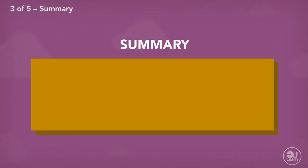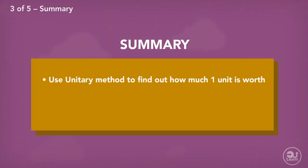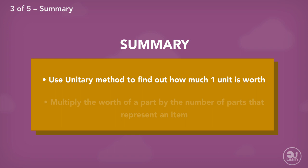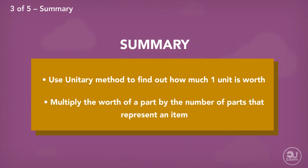To summarise, when sharing an amount using a ratio: calculate how much one part is worth by first finding the sum of the parts — adding the values in the ratio together. Then divide the value given by the total parts to give you the value of one part. Using the values in the ratio, multiply what one part is worth by these values to give the final answers.